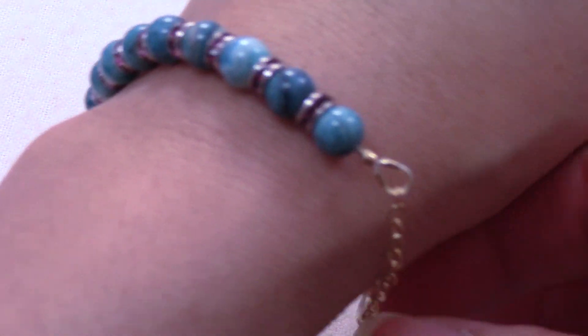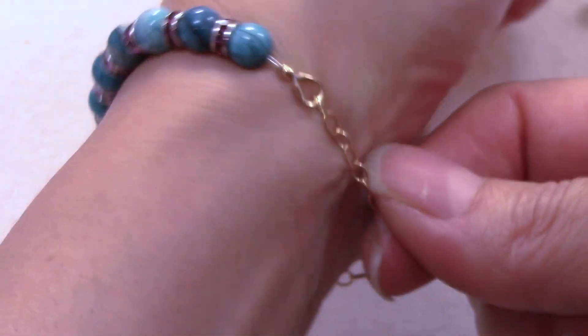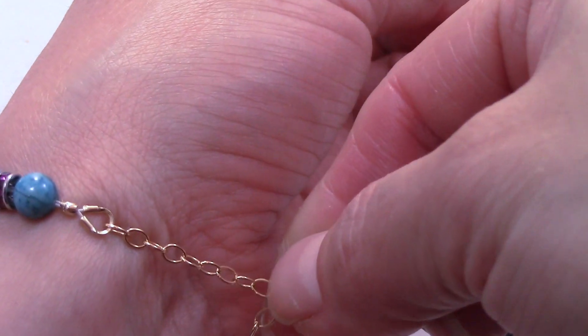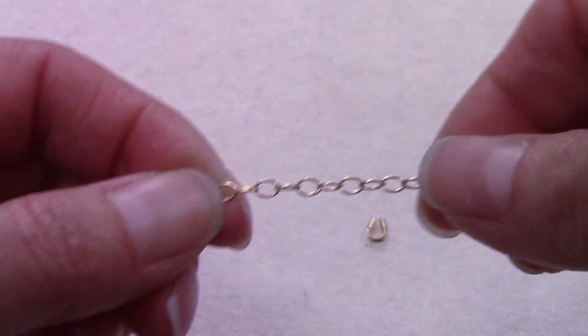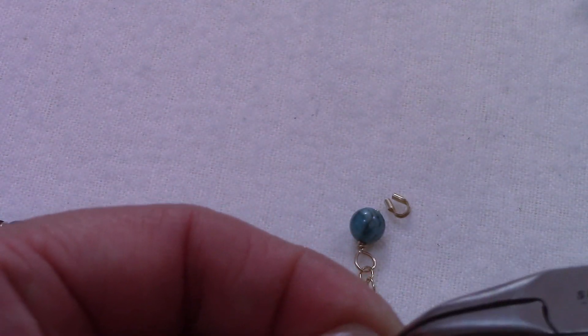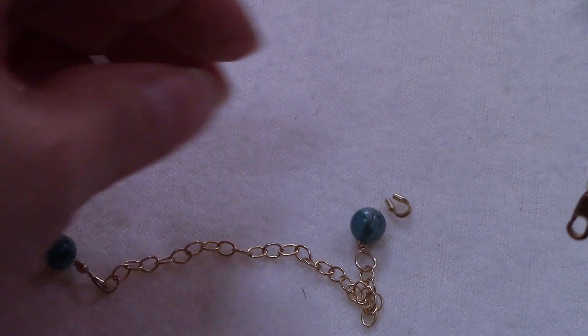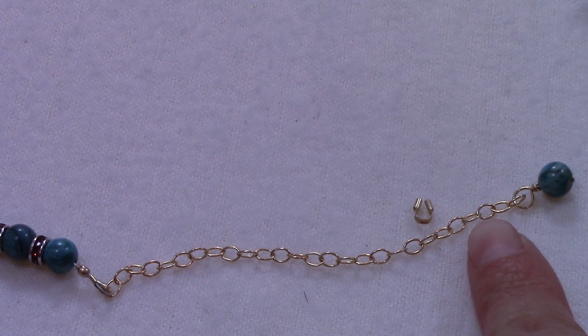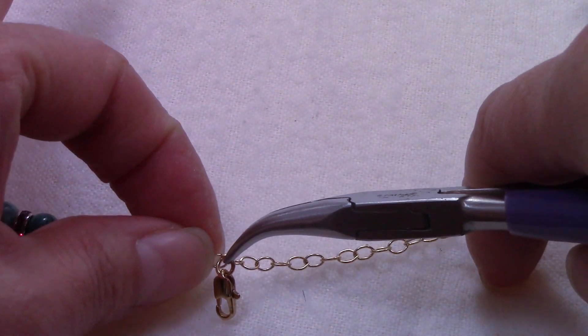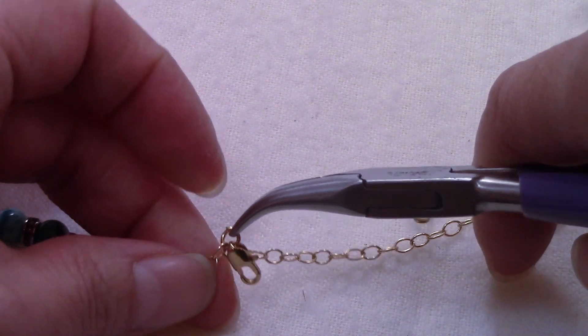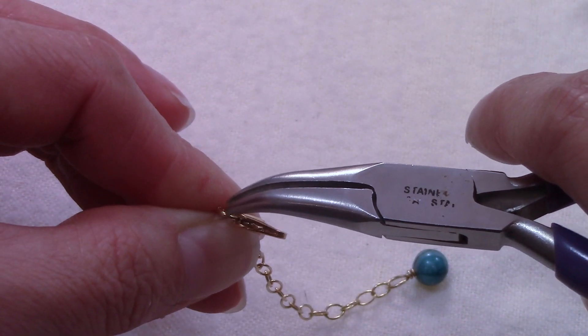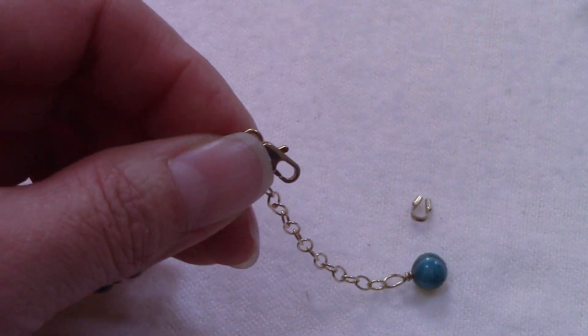And the last step we're going to have to add our clasp. So I want my clasp attached to this bead. Go ahead and open your clasp, count your chains, and I want it in this one. So go ahead and attach it. And we are basically done with our bracelet.